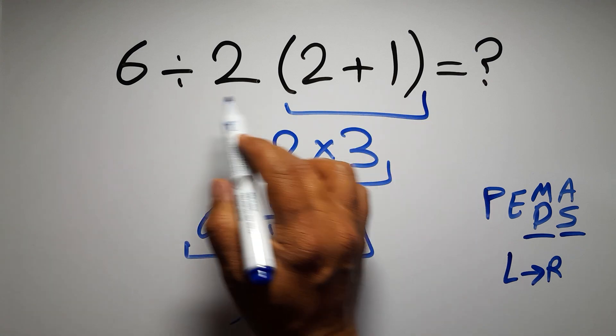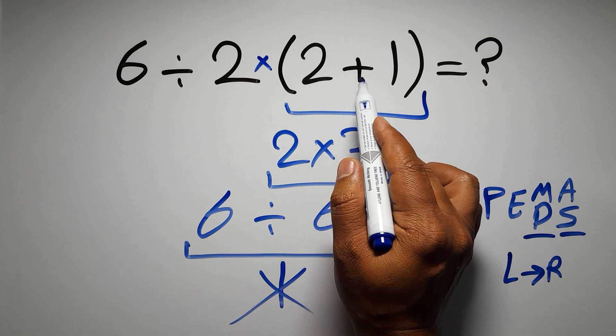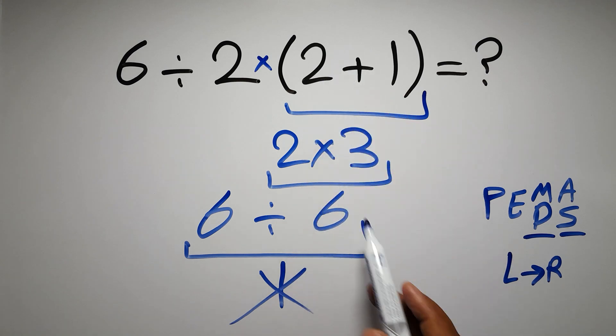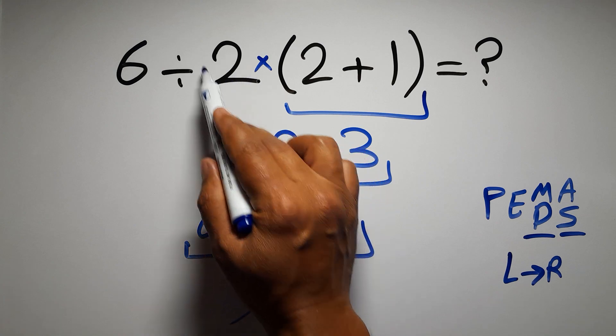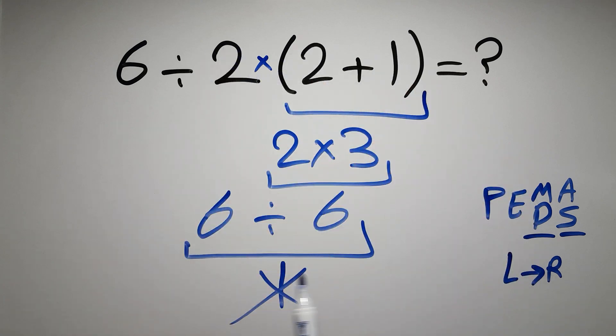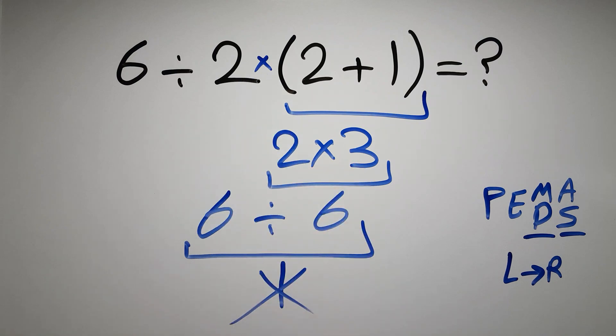In this expression, we have one division, one multiplication, and one parentheses. Inside this parentheses, we have one addition. Here we have a multiplication, because in mathematics, when a number is placed next to parentheses, it means multiplication, and we usually don't write a multiplication sign for brevity.